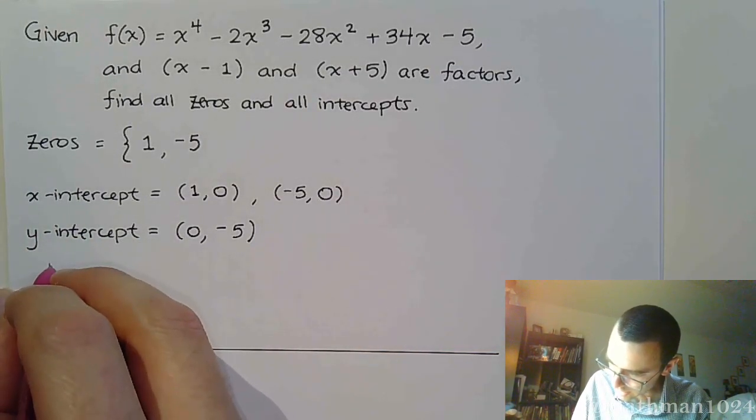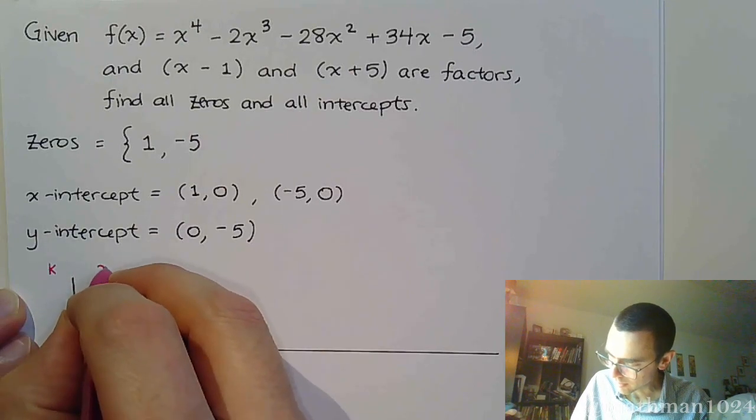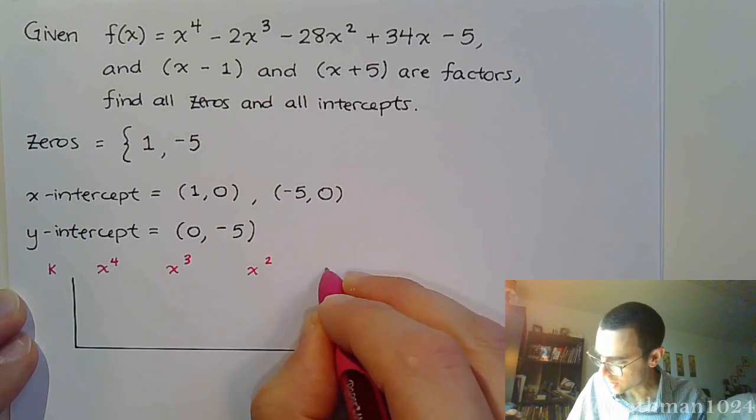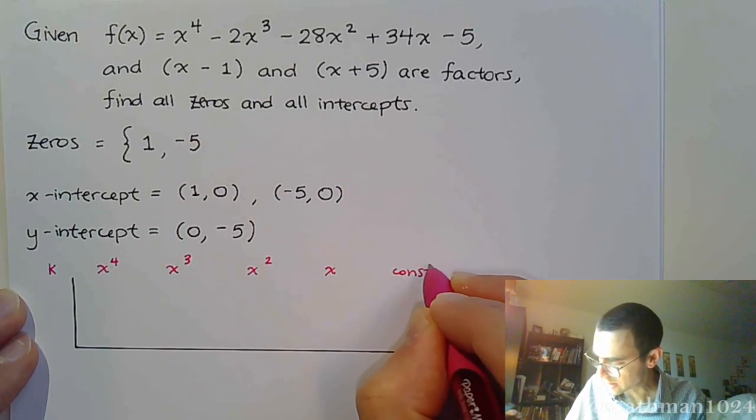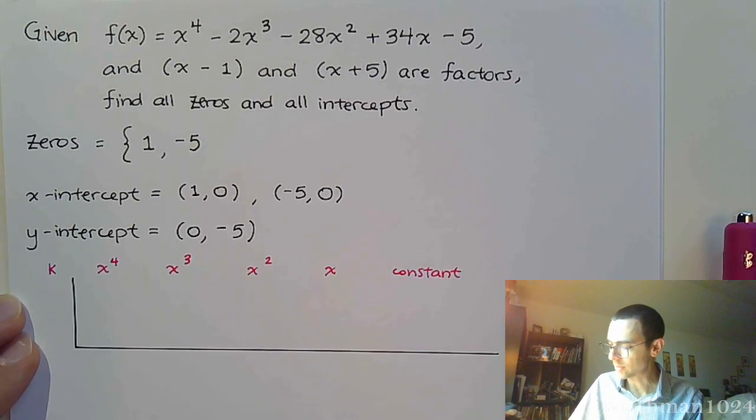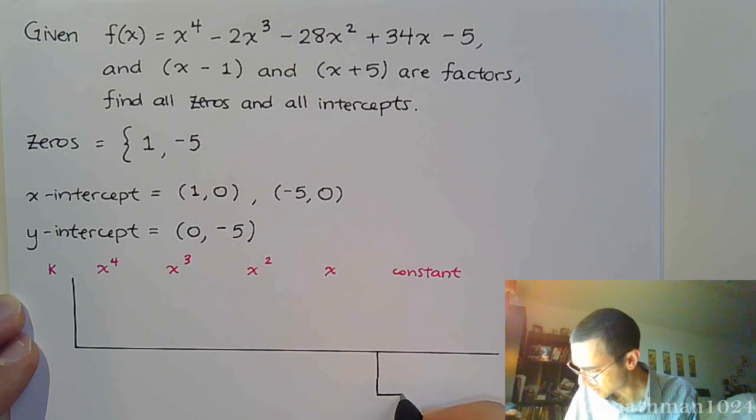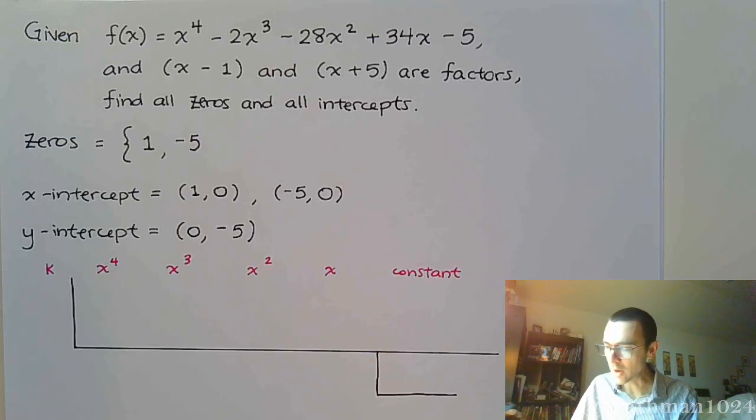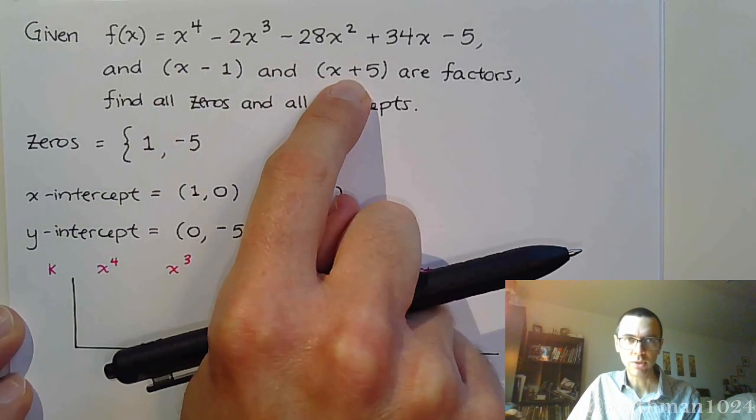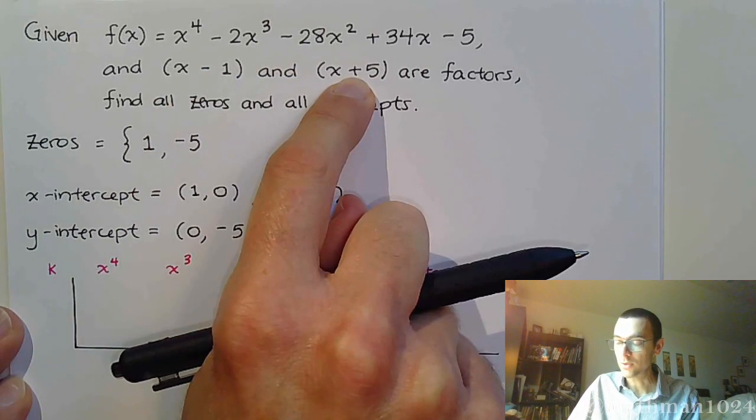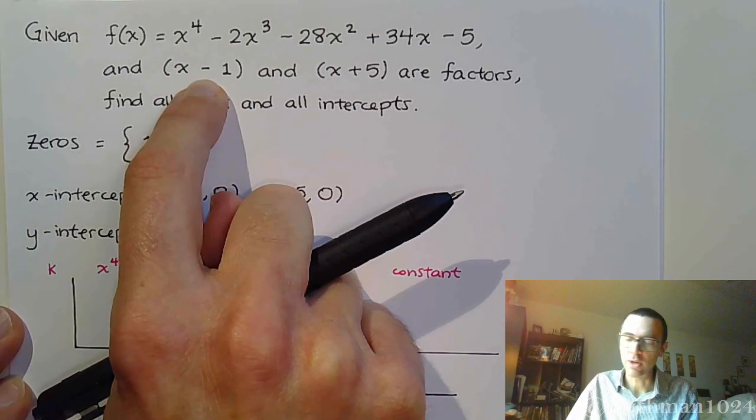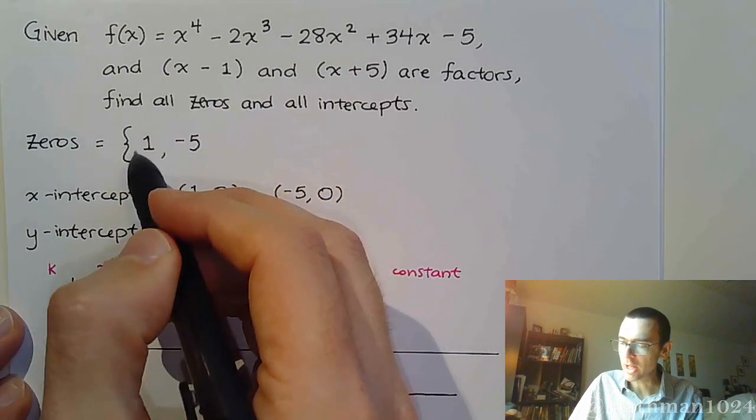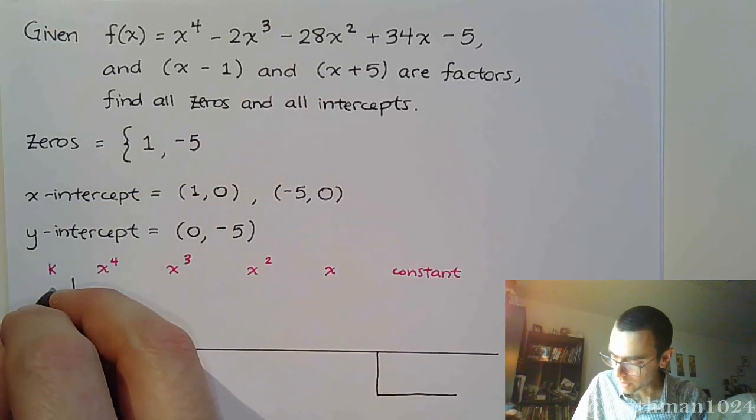So my column headings, that's k, x to the 4th, x to the 3rd, x squared, x, and then my constant. And I understand that my remainder is supposed to be 0. If it's not, we've done something wrong. So it doesn't matter which of these guys you start with. If you want to start with this one or that one, it doesn't really matter. So for this one, let's go ahead and start here. I know it's a little bit different than what's in the handout, but it's still going to work out to be the same. My k value is 1. It's the same value as the 0 we have there, so I'm going to put it 1 here.